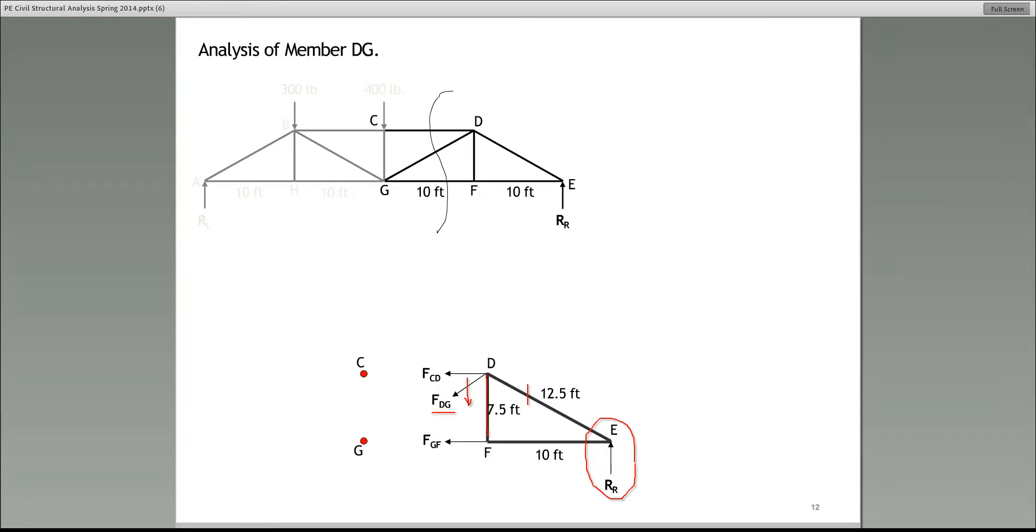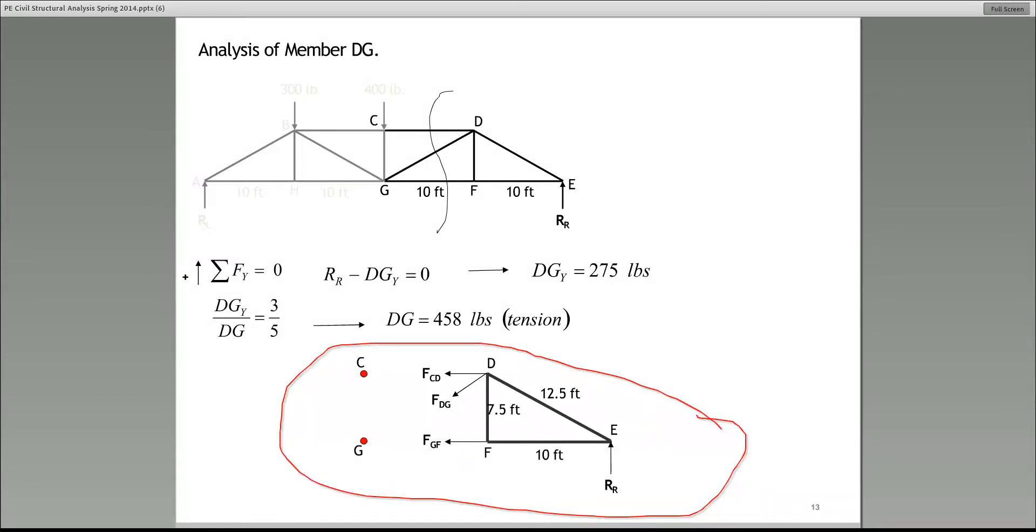So the most direct is summing the forces in the Y direction. In fact, on page 13, I'm showing that. Summing the forces in the Y direction for the entire free body diagram for this entire section. As you can see, RR is equal to minus DGY, that's equal to zero. So then DGY would be equal to 275 pounds. Pay very close attention here. DGY, that's the Y component of the force in member DG, that's 275 pounds. That is not the answer, though. That's not the force in GD, that's only the Y component of the force in GD.